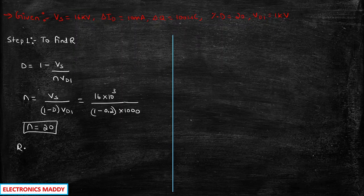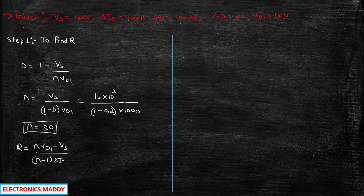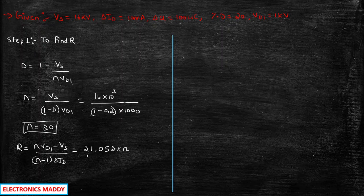The value of R is found by the formula: R equals N into Vd1 minus Vs, whole divided by N minus 1 into delta Id. After simplifying this expression, you get R equal to 21.052 kilo ohms.